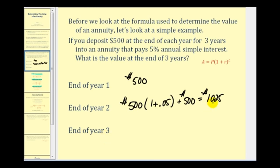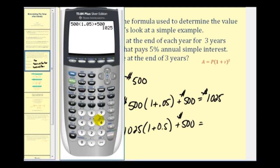Now throughout year three, the $1,025 earns simple interest at 5%, and then at the end of the year we make another deposit of $500. This would be the value of the annuity at the end of three years, given we use 5% simple interest, with deposits at the end of each year. So we have $1,756.25.